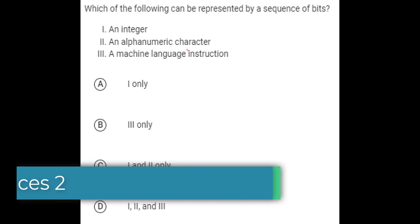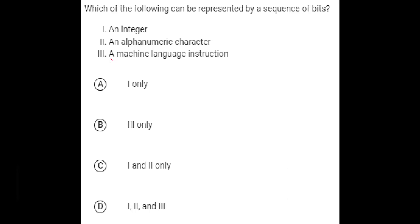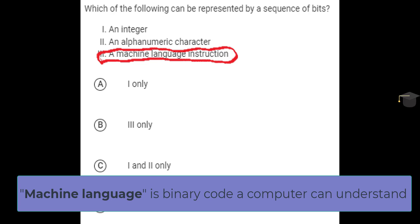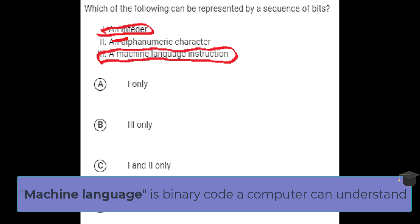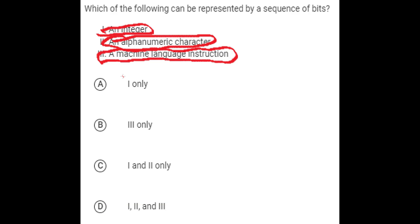A similar question offers machine language instructions as an option, which might seem different — but it's not. When you finish writing code, it compiles into zeros and ones, and that's how the computer reads it. Just like integers and alphanumeric characters via ASCII, machine language instructions are also represented as binary. So the answer is still all of the above.